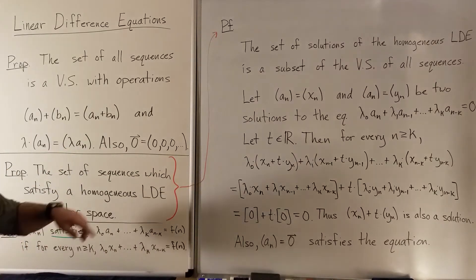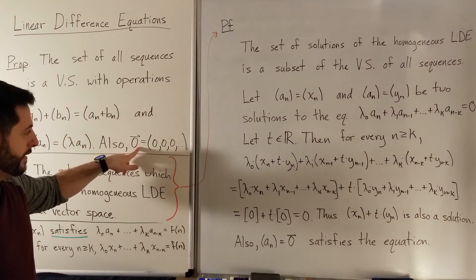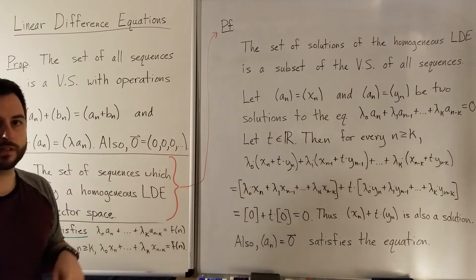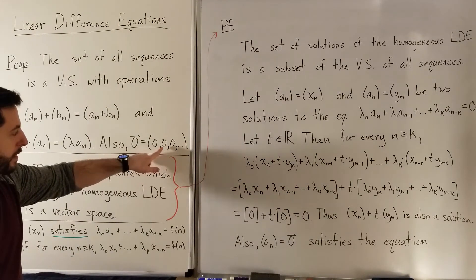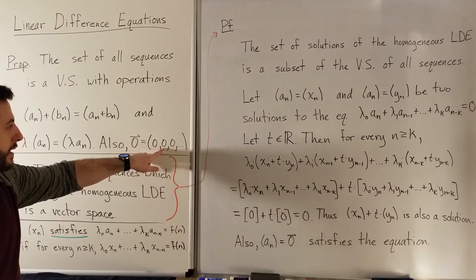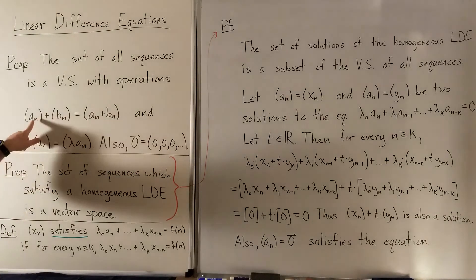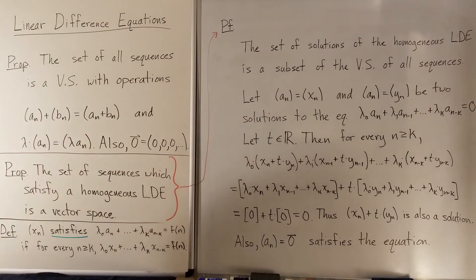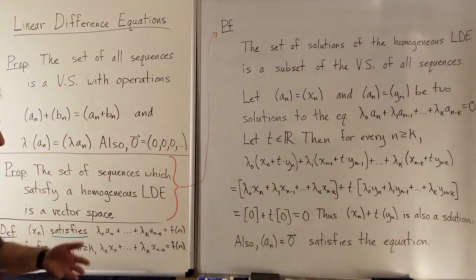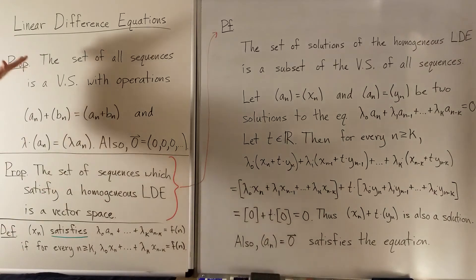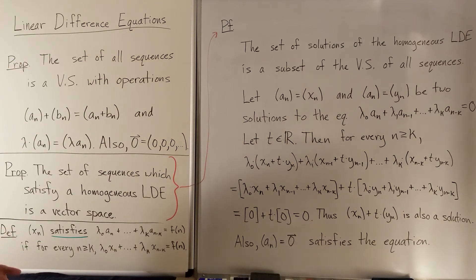Scalar multiplication works very similarly: if I want to scale an entire sequence, I just scale each individual term. Our zero vector here is just the sequence of all zeros. The main property the zero vector should have is that if you add it to a sequence it shouldn't change the sequence — and adding zero to each individual term doesn't change any of them. I'm not going to go through the proof of this proposition; it's that 10-item checklist at the beginning of section 4.1, and you can go through that checklist yourself.